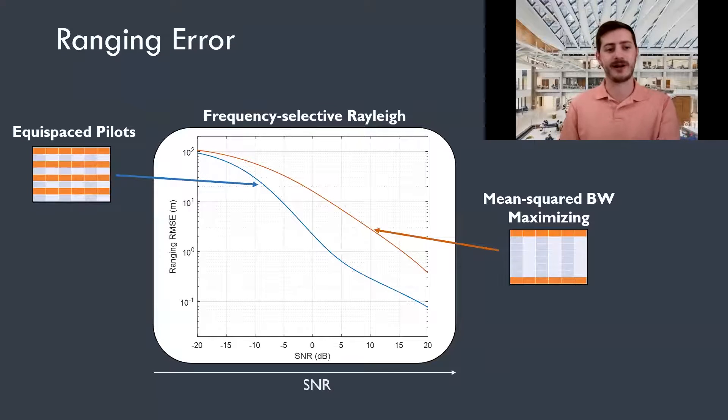And here for our SNR range, the equally spaced pilot signal always outperforms. And that's because maximizing your mean squared bandwidth doesn't really give you any benefit until you reach very extremely high SNRs. And you can also visualize the hump that occurs at low SNRs. And that's the thresholding effect that I was discussing earlier.